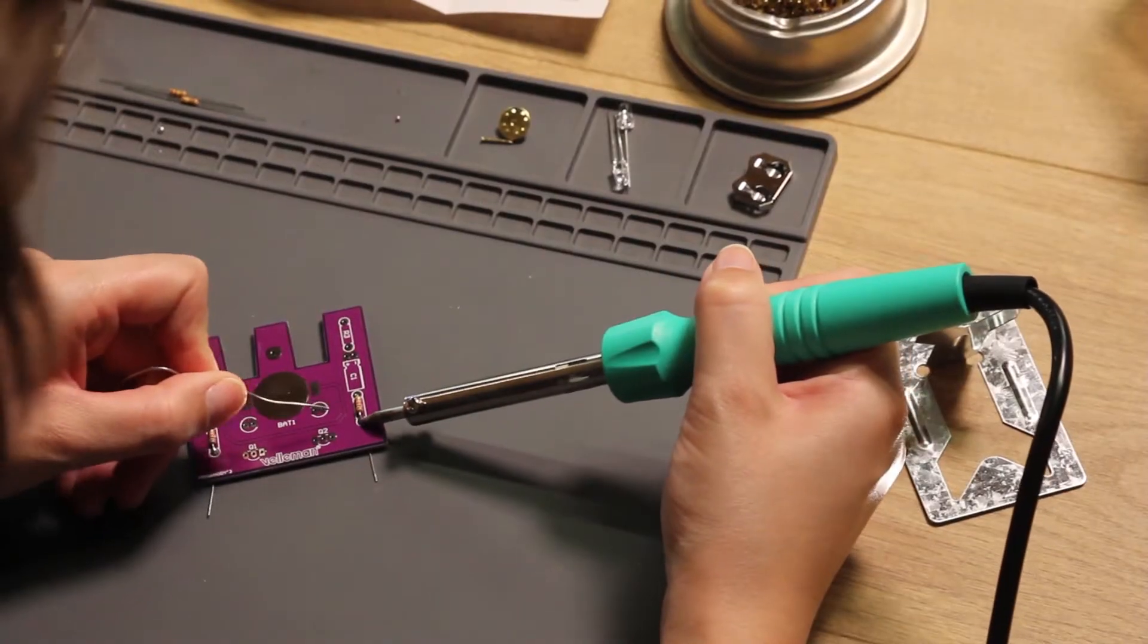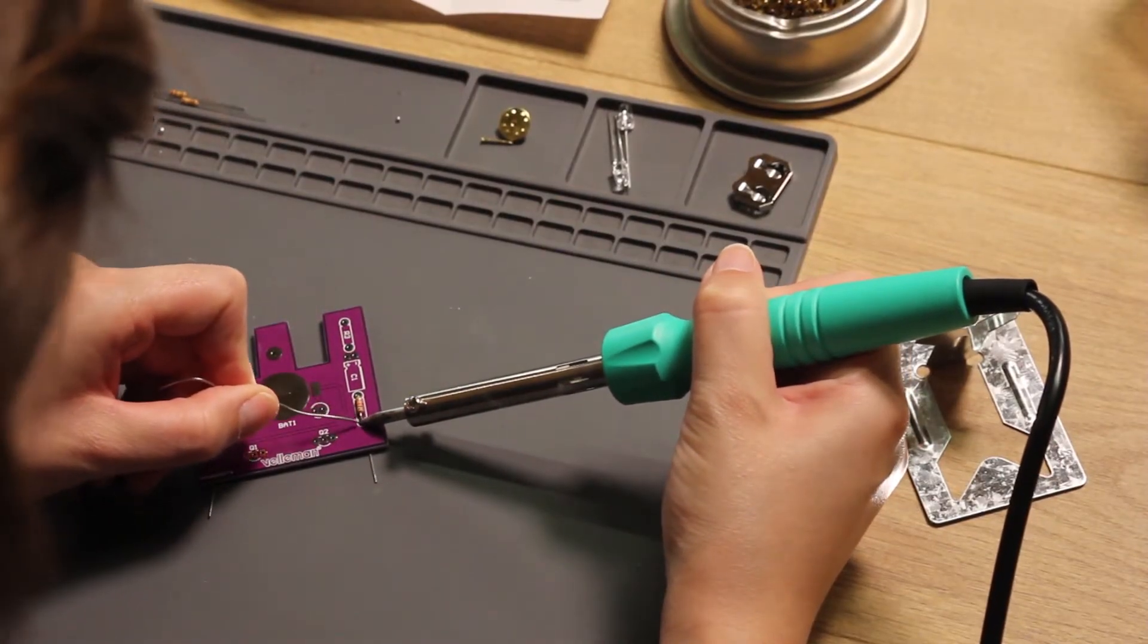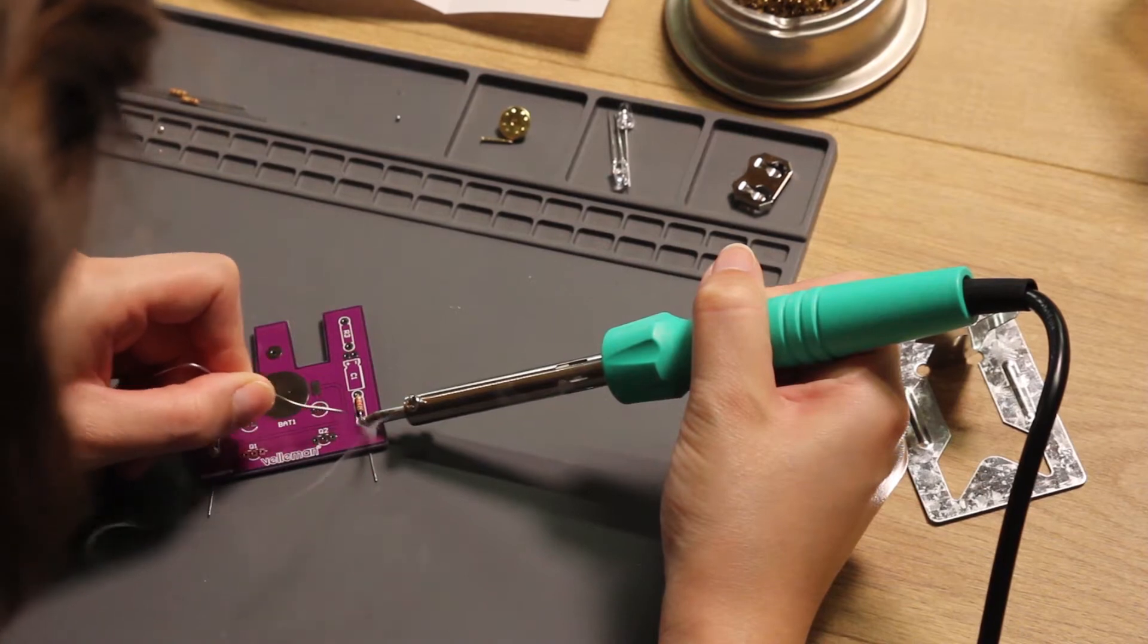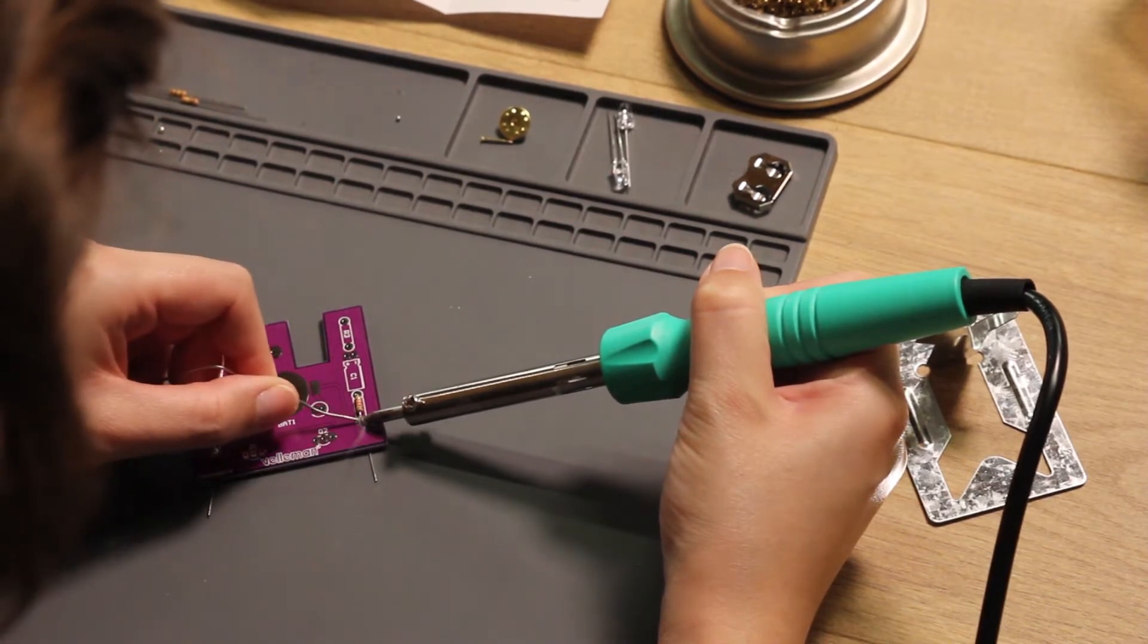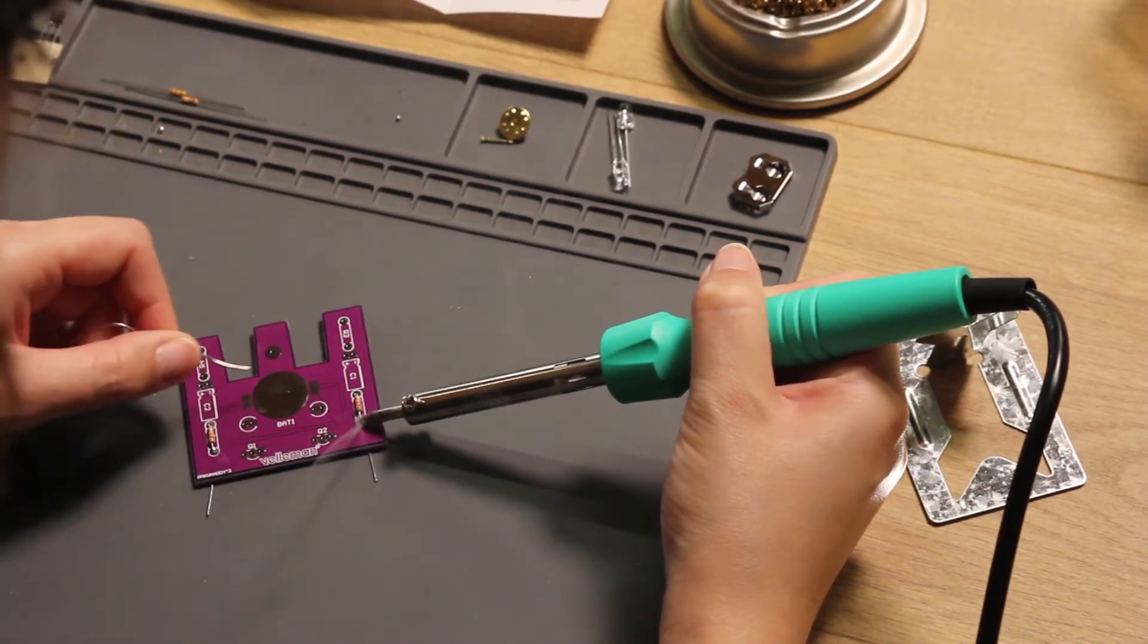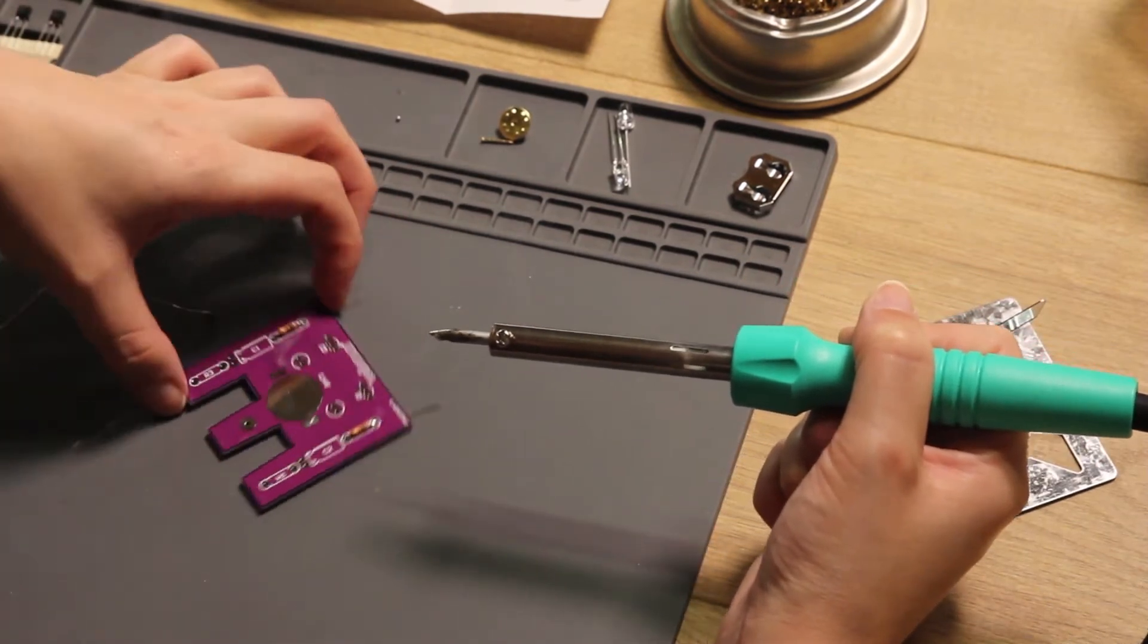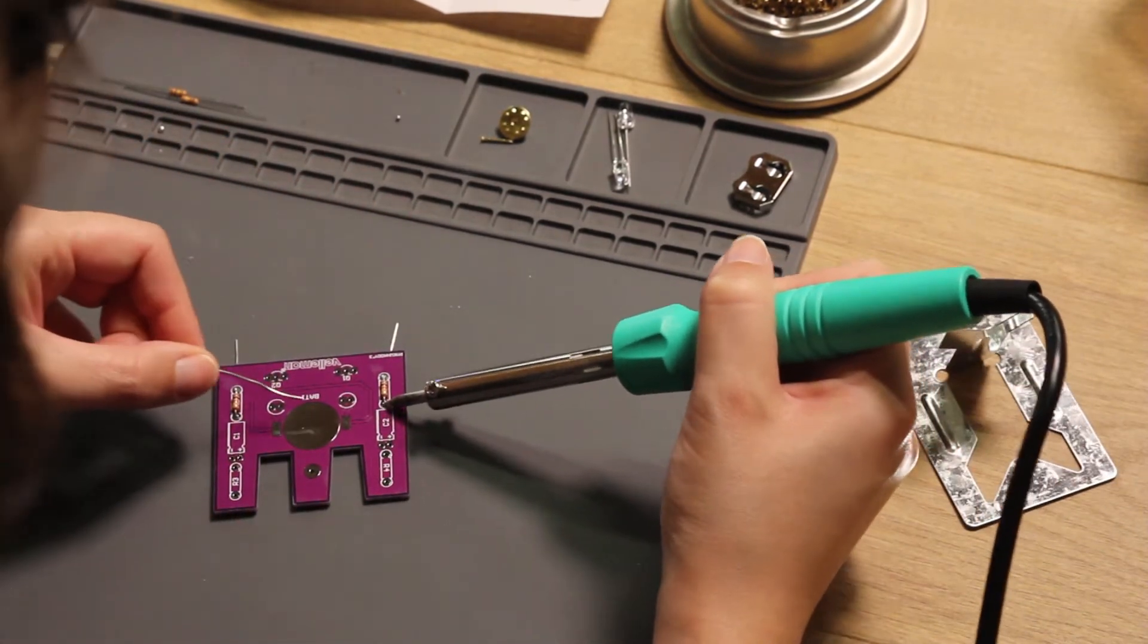But what is soldering? Soldering is a way of joining different kinds of metal together like iron, silver or copper. We can do this by melting what is called solder. Solder is the form of glue that we're going to use. But in our case we need to melt the solder by using a hot soldering iron.